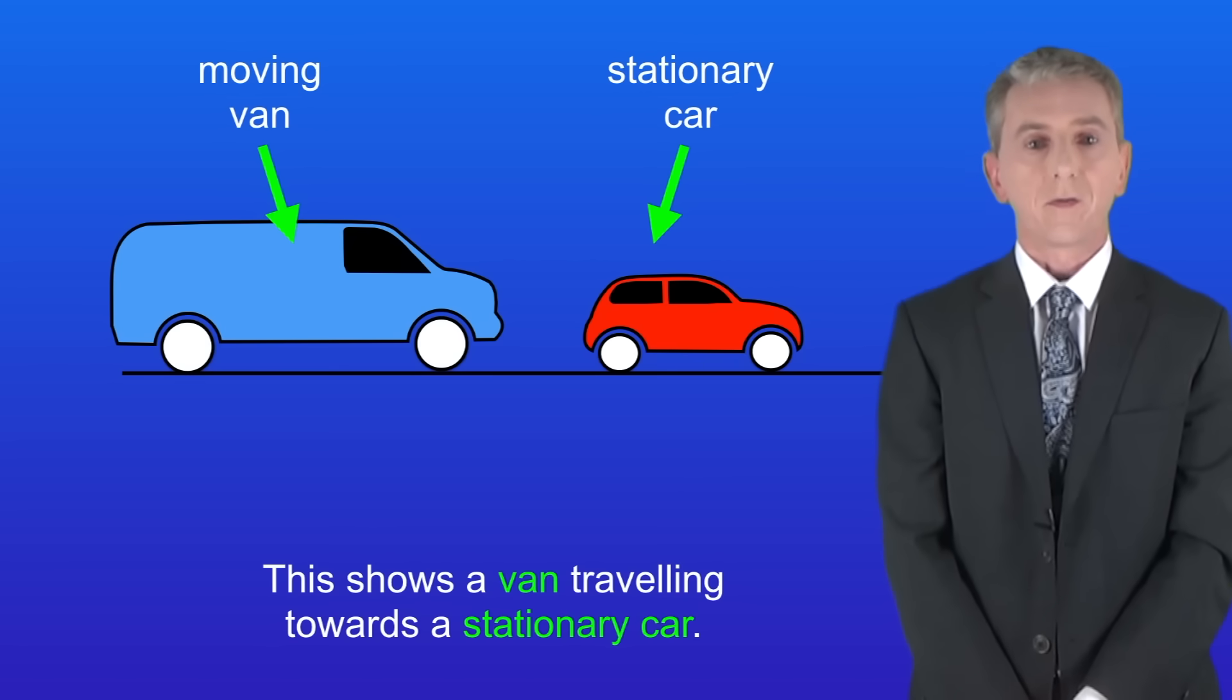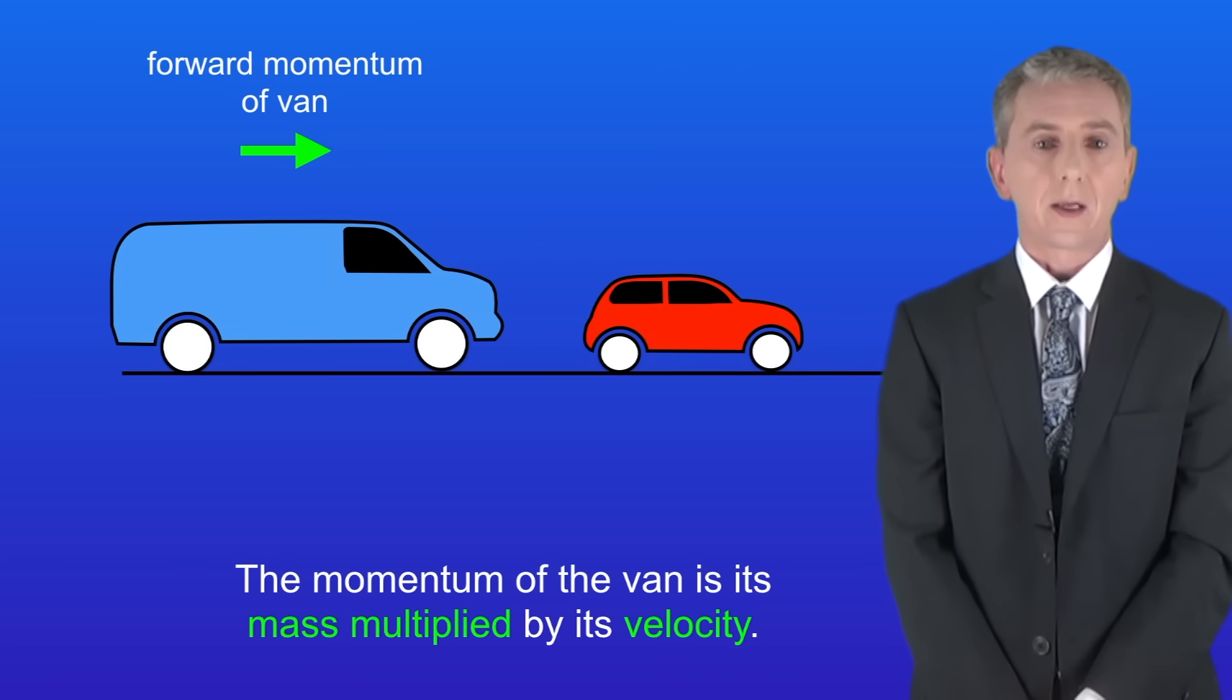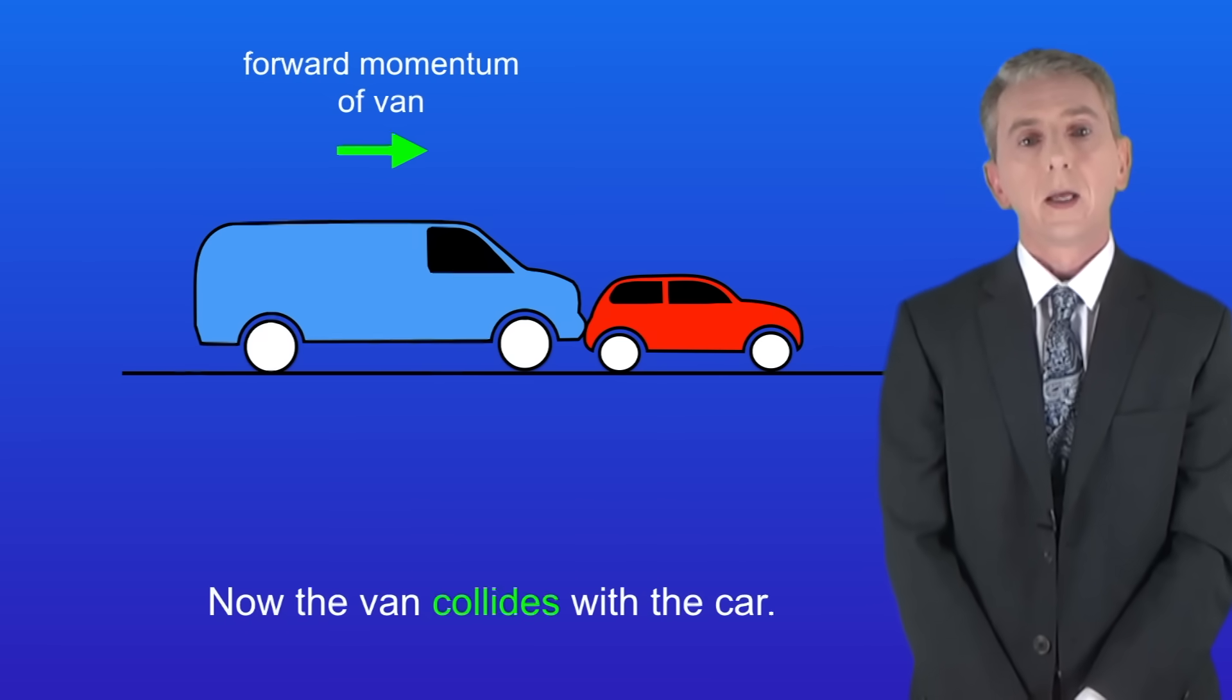I'm showing you here a van traveling towards a stationary car. Because the van's moving it has momentum in the forward direction. The momentum of the van is its mass multiplied by its velocity. The stationary car has no momentum as it's not moving. Now the van collides with the car.